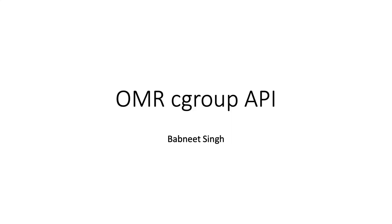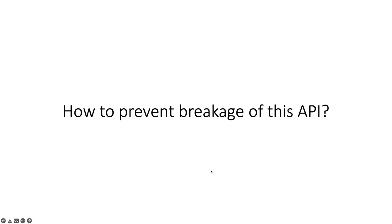Thanks. Today I will be providing an update on the current state of the cgroup API — what it does, the existing problems we're facing with this API, and what steps we will be taking in resolving those problems. The main objective of this presentation is to start a discussion so that we can prevent breakage of this API in the future. Before diving into that discussion, I will give a brief overview of what cgroup — or control group on Linux — is and what the OMR cgroup API does.